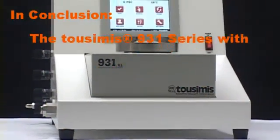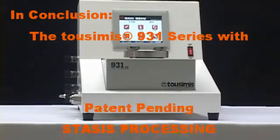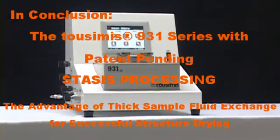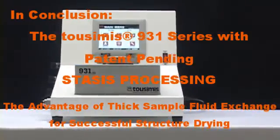In conclusion, the TUSIMAS 931 series, with its standard features and access to the patent-pending stasis processing, gives the user the advantage when taking on thicker, more difficult samples.